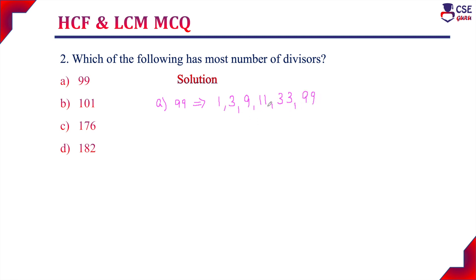These are all the divisors for the number 99. Option B, 101, can only be divided by itself and 1. So 1 and 101 are the only two divisors for this number.